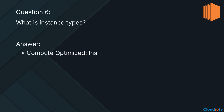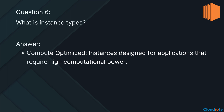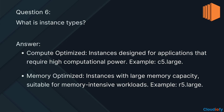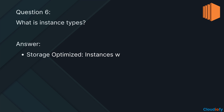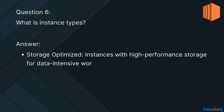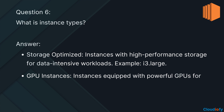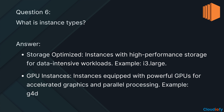Compute-optimized instances are designed for applications that require high computational power — example: C5.large. Memory-optimized instances have large memory capacity, suitable for memory-intensive workloads — example: R5.large. Storage-optimized instances offer high-performance storage for data-intensive workloads — example: I3.large. GPU instances are equipped with powerful GPUs for accelerated graphics and parallel processing — example: G4DN.xlarge.